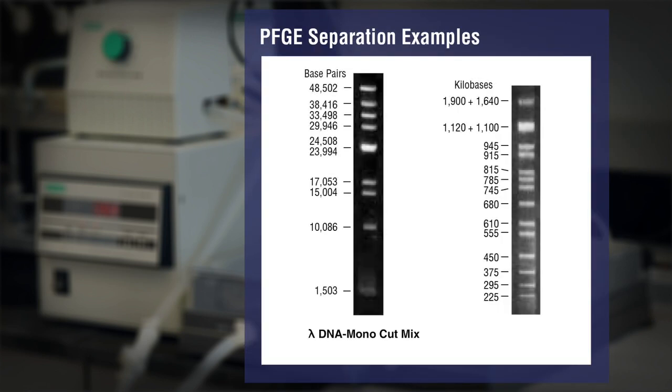Here are separation examples of the lambda monocut mix from 1.5 to 48.5 kilobases and yeast chromosomes from 225 to 1,900 kilobases.